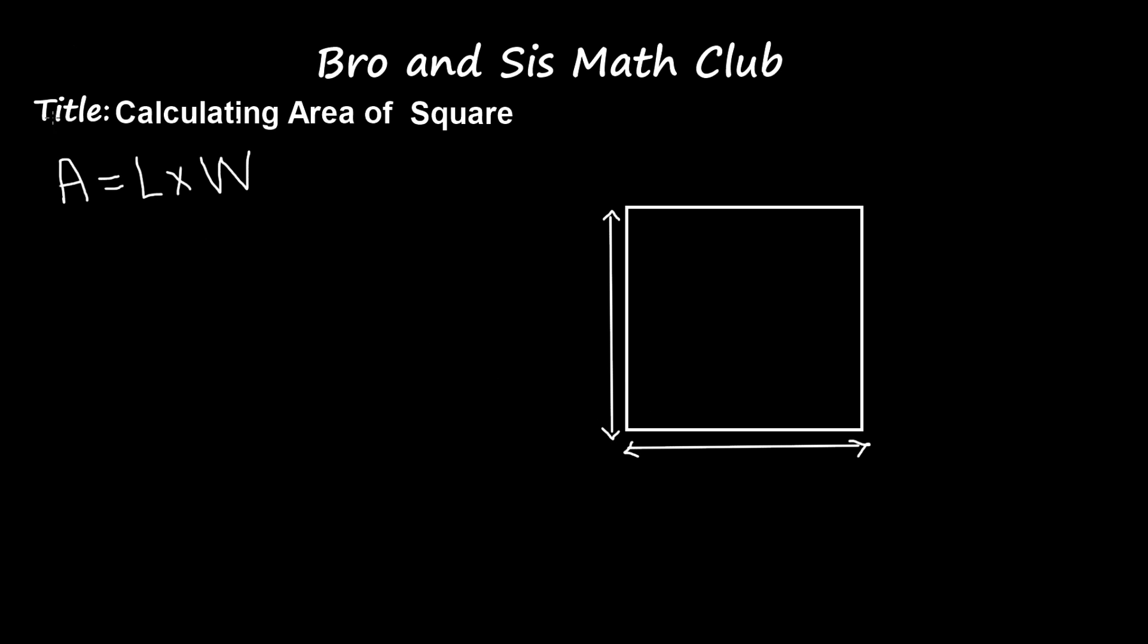Because in a square, all sides have the same measurement. This side, this side, this side, and this side—they all have the same measurement.